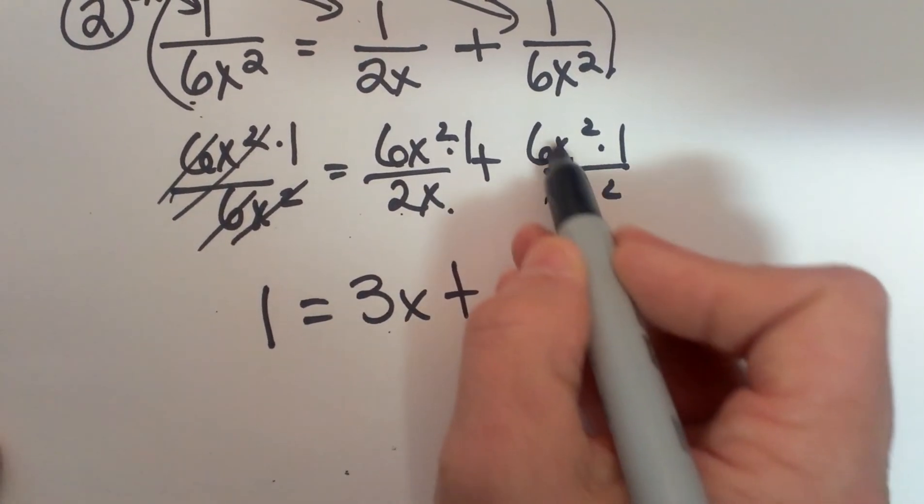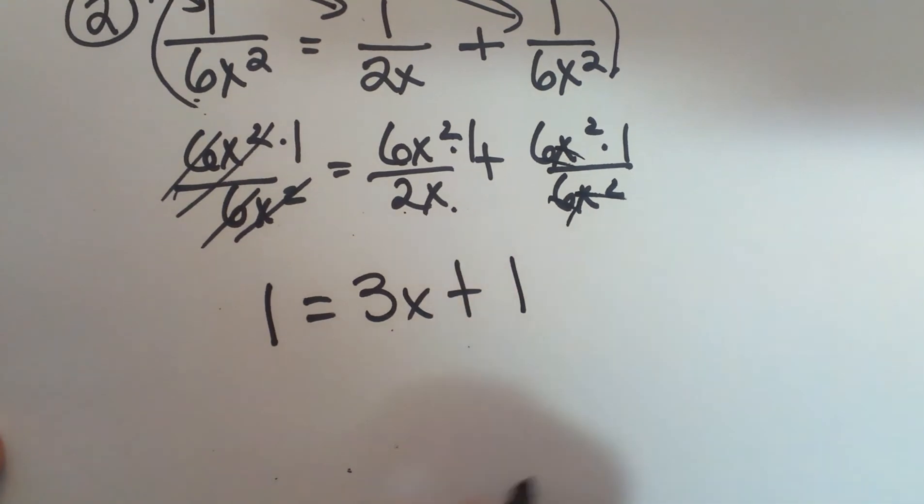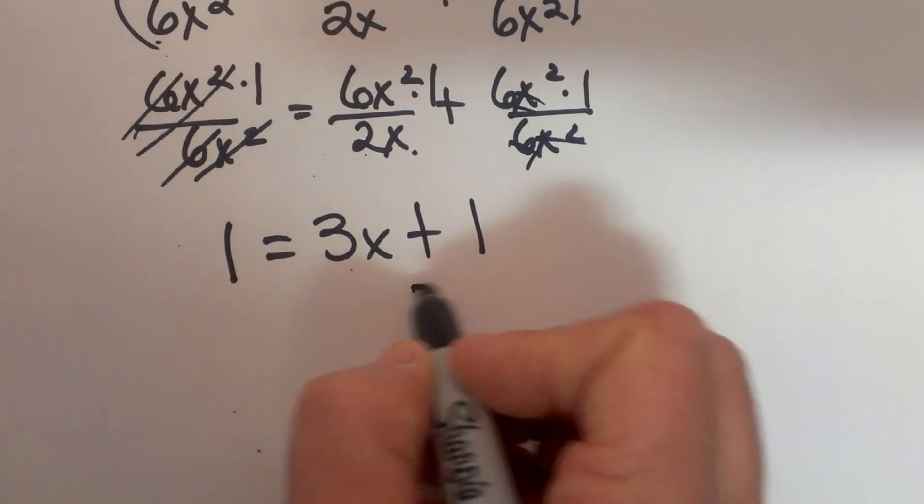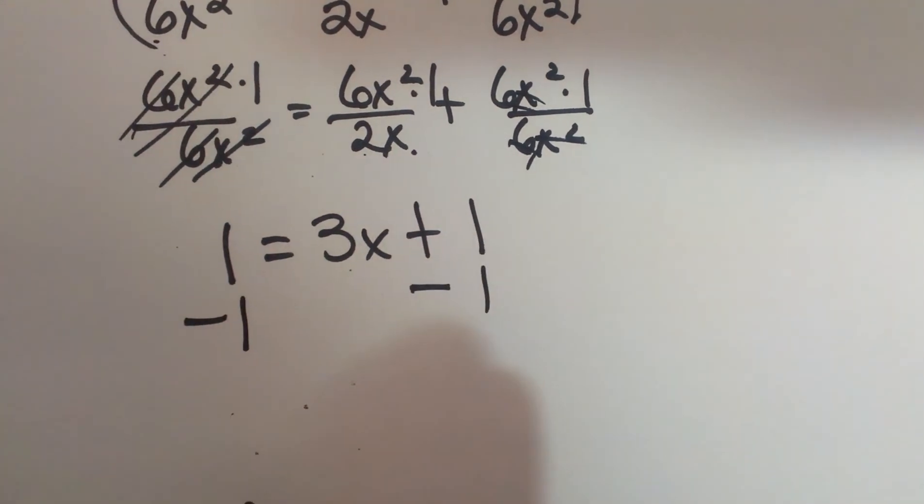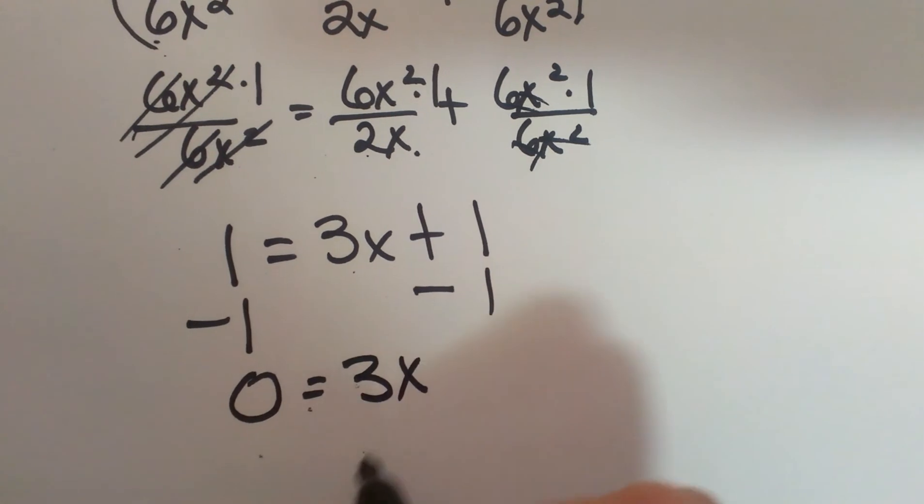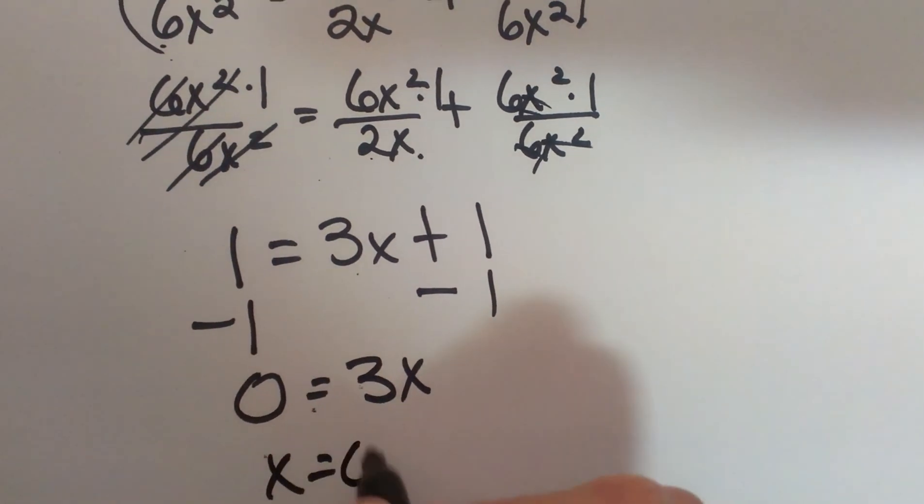Oh that cancels out doesn't it. So that is also a 1. Now from here I have a simple two step equation. Subtract 1 from both sides and I get 1 minus 1 which is 0 is equal to 3x. So x has to be 0.